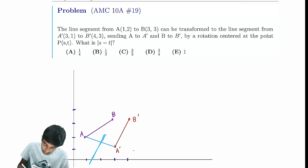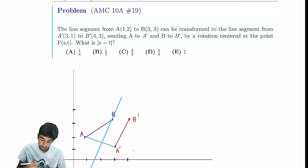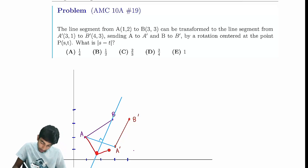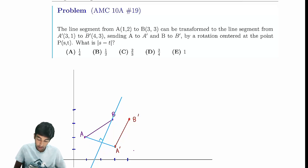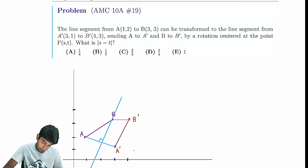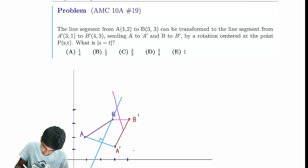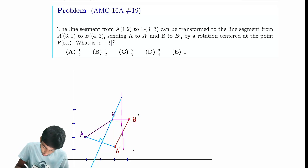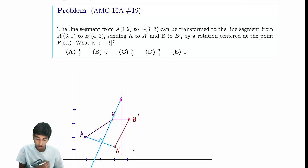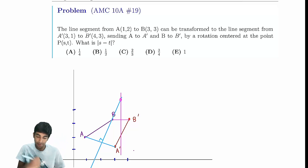So the rotation center has to lie on the perpendicular bisector of AA'. Why? Because all the points on the perpendicular bisector are equidistant from A and A', which the rotation center must be. Similarly, it must also lie on the perpendicular bisector of BB'. So the center must be somewhere around their intersection, and to find it exactly, we find both perpendicular bisectors.